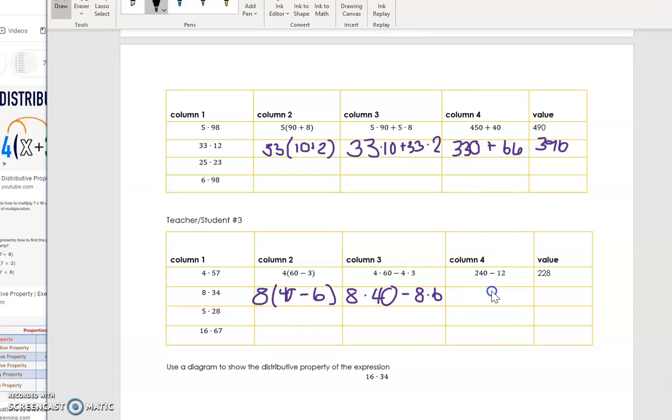In column four, I will show out the multiplication. So 8 times 40 would be 320, minus 8 times 6 is 48. And then again, I can get my answer. So I'm going to do 320 minus 48, and I'll get 272.